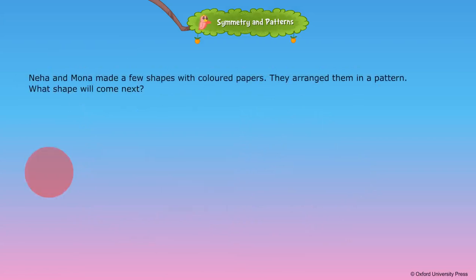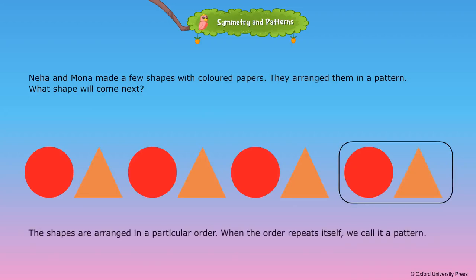Neha and Mona made a few shapes with coloured papers. They arranged them in a pattern. What shape will come next? The shapes are arranged in a particular order. When the order repeats itself, we call it a pattern.